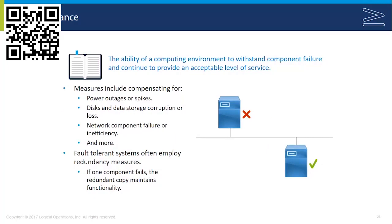Redundancy is used to provide fault tolerance, which speaks to a system's ability to withstand failure. Your ability to withstand failure is directly related to the redundancy built into the system. Fault tolerance identifies and eliminates single points of failure and relates to uptime. Measures include compensating for power outages and spikes, disk and data storage corruption or loss, network component failure, loss of internet or WAN connections, and more. The way to provide fault tolerance is to build in redundancy so that if one component fails, the redundant copy can maintain functionality.